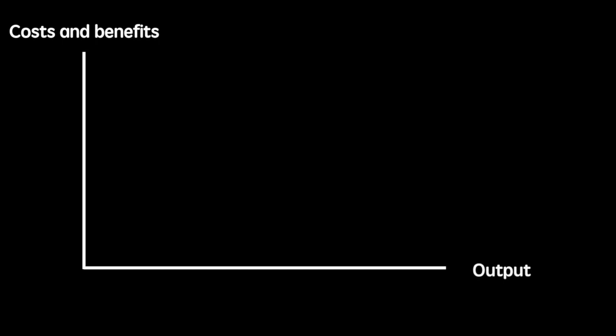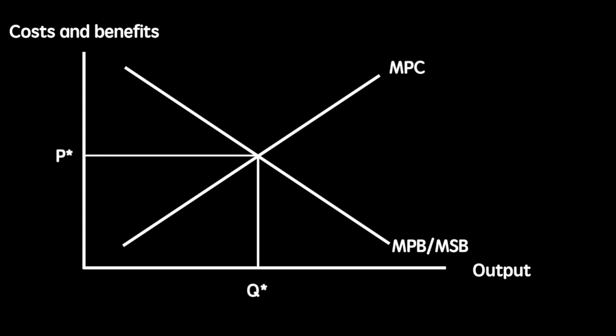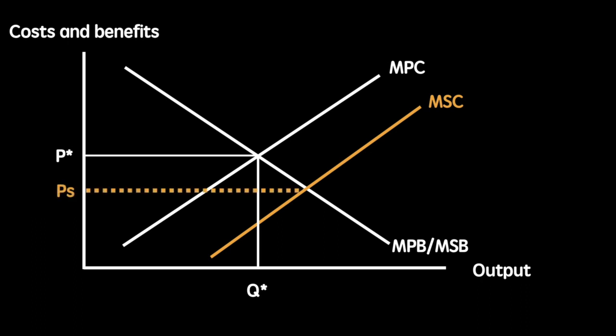Let's work through the diagram. We use the same axes as before. This time we assume that our marginal private benefit and marginal social benefit curves are the same. Next, we build in our marginal private cost. If left to market forces, the production level would be Q star at a price of P star. However, the marginal social cost is lower than the marginal private cost due to the extensive benefits gained by firms not involved in the production process. Thus, the socially optimal level of output, QS, is greater than the free market allocation Q star, and the socially optimum price, PS, is also lower than the free market price P star.